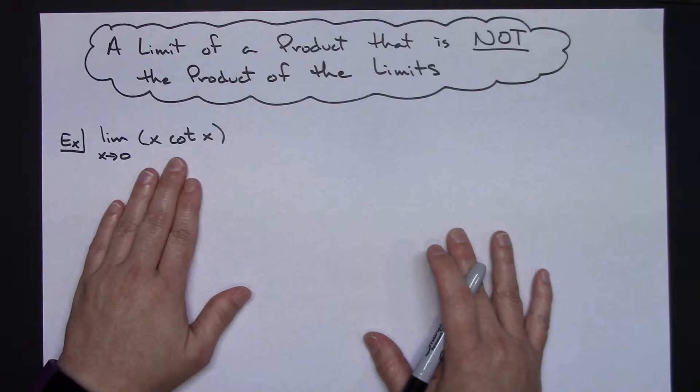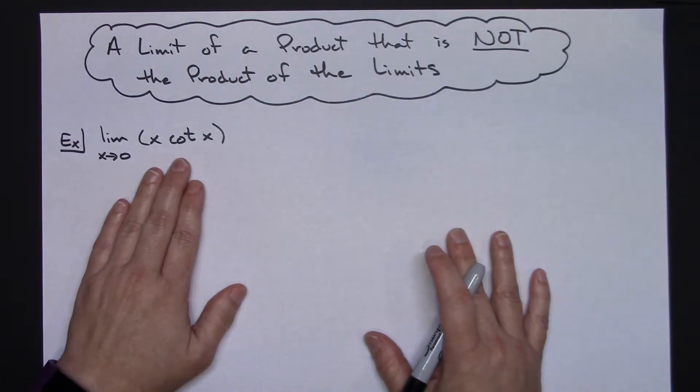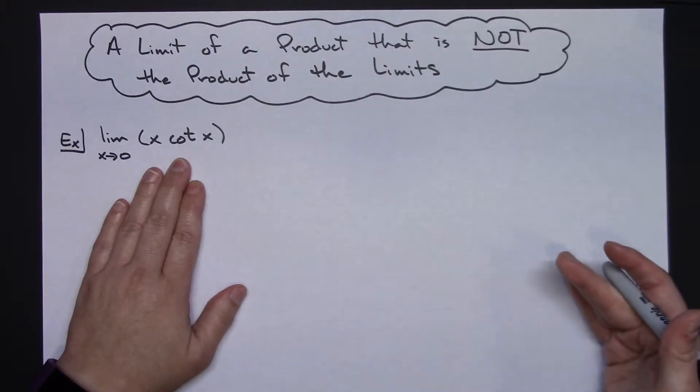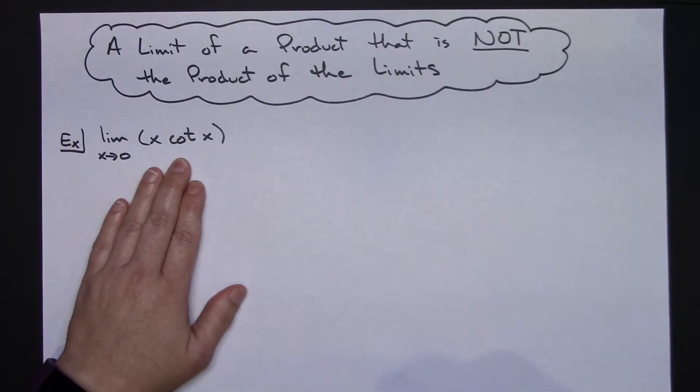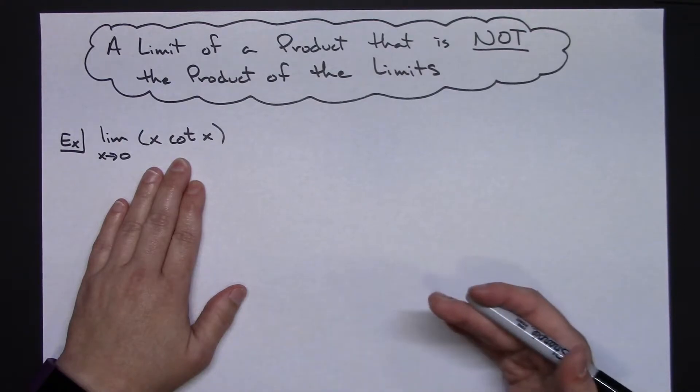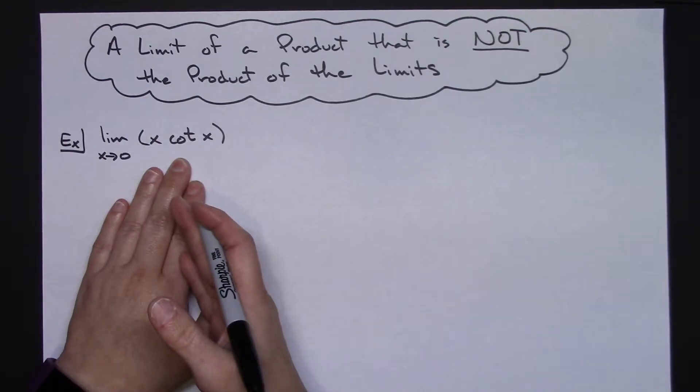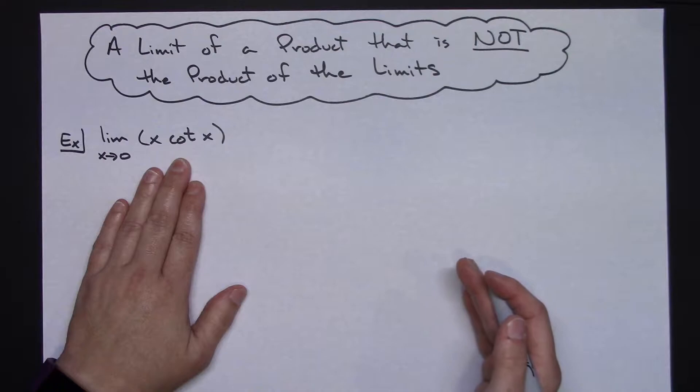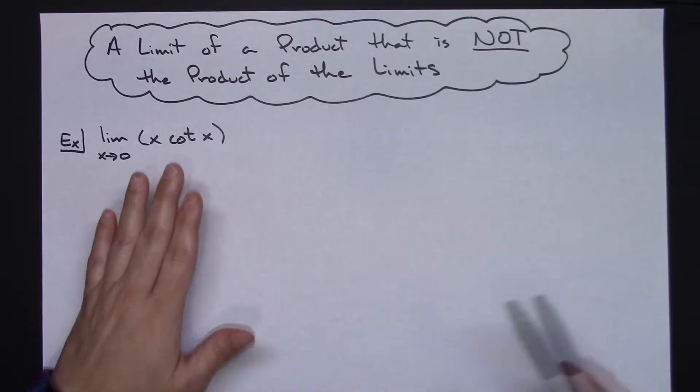So if I'm trying to do this limit as x approaches 0 of x cotangent x, I can see that this is a product. So because I have went through those limit theorems and I know that I can break that up and multiply the two limits, that might be what I do to begin with.